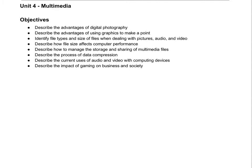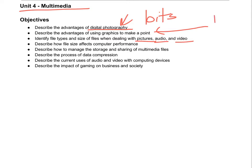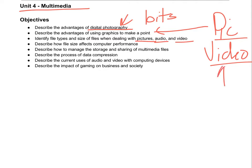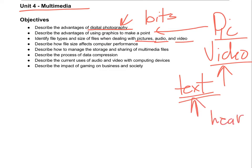Here we are finishing up the multimedia section. When we say digital, we're talking about bits representing photography, audio, video, pictures, and so forth. What are some of the advantages of using graphics to make a point? A picture or video may be a much better way to represent something than just text, and it's also easier to remember than reading text alone.